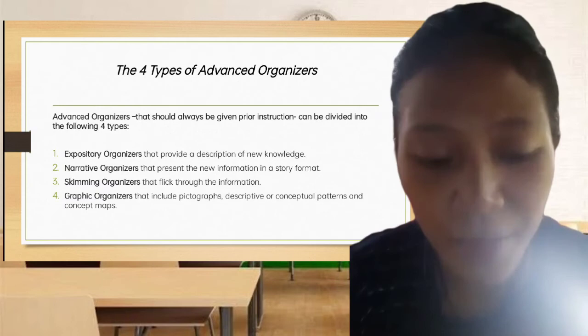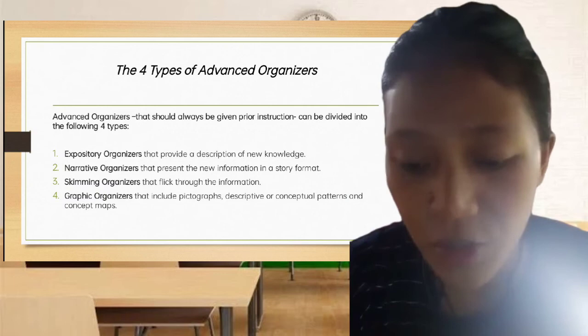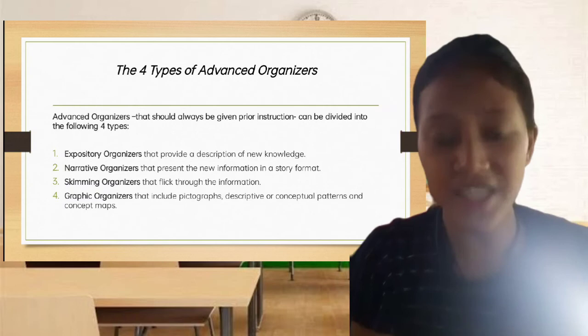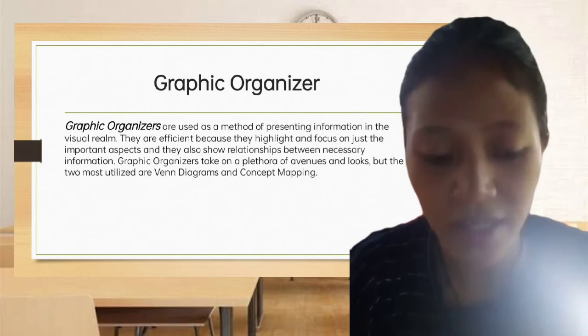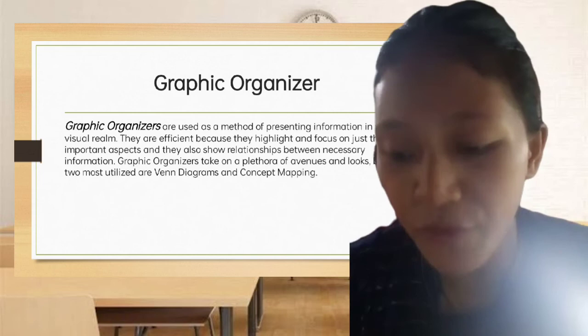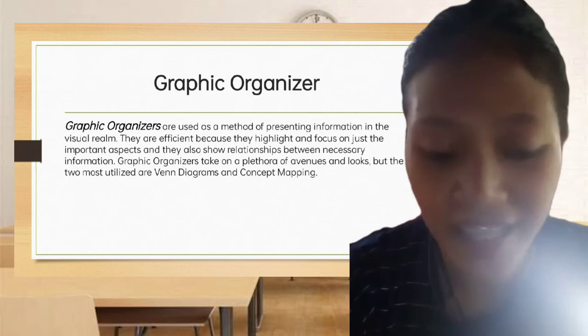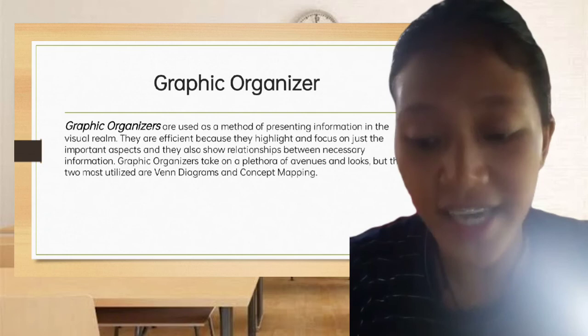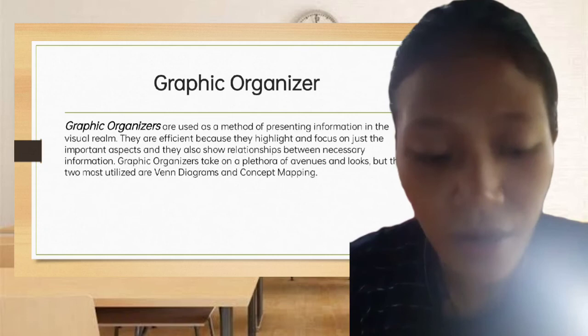A graphic organizer includes pictographs, descriptive or conceptual patterns, and concept maps. These are used as a method of presenting information in a visual form. They are efficient because they highlight and focus on important aspects and show relationships between necessary information. Two commonly used graphic organizers are Venn diagrams and concept mapping.